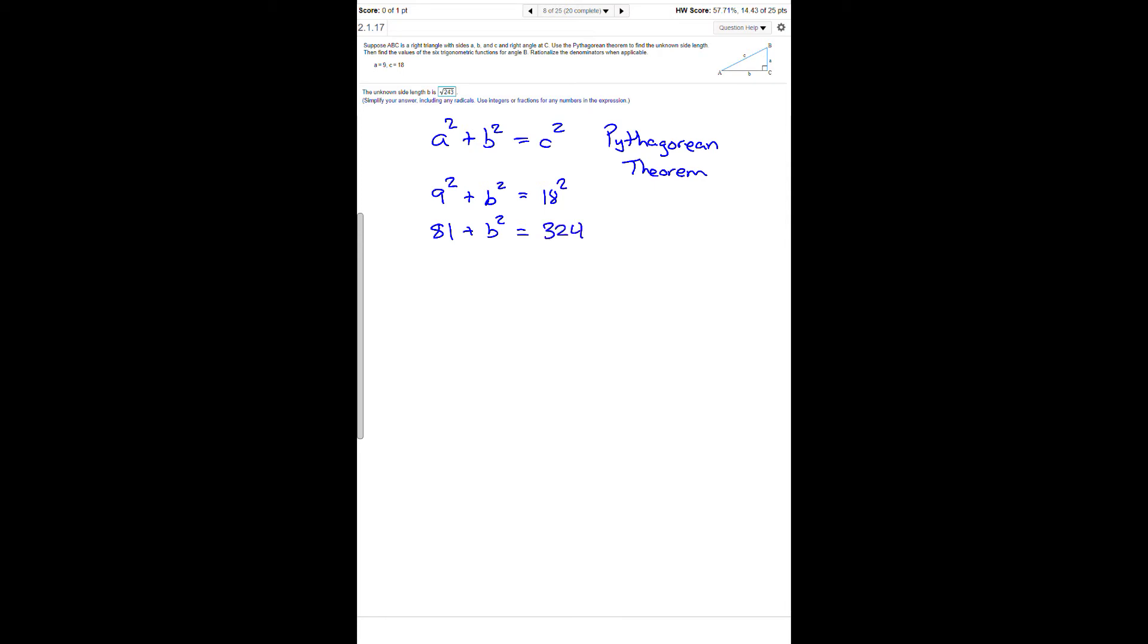To solve for B, we subtract 81 on both sides of our equation. That means we have B squared equals 243. To get B by itself, we take the square root on both sides, so B equals the square root of 243.